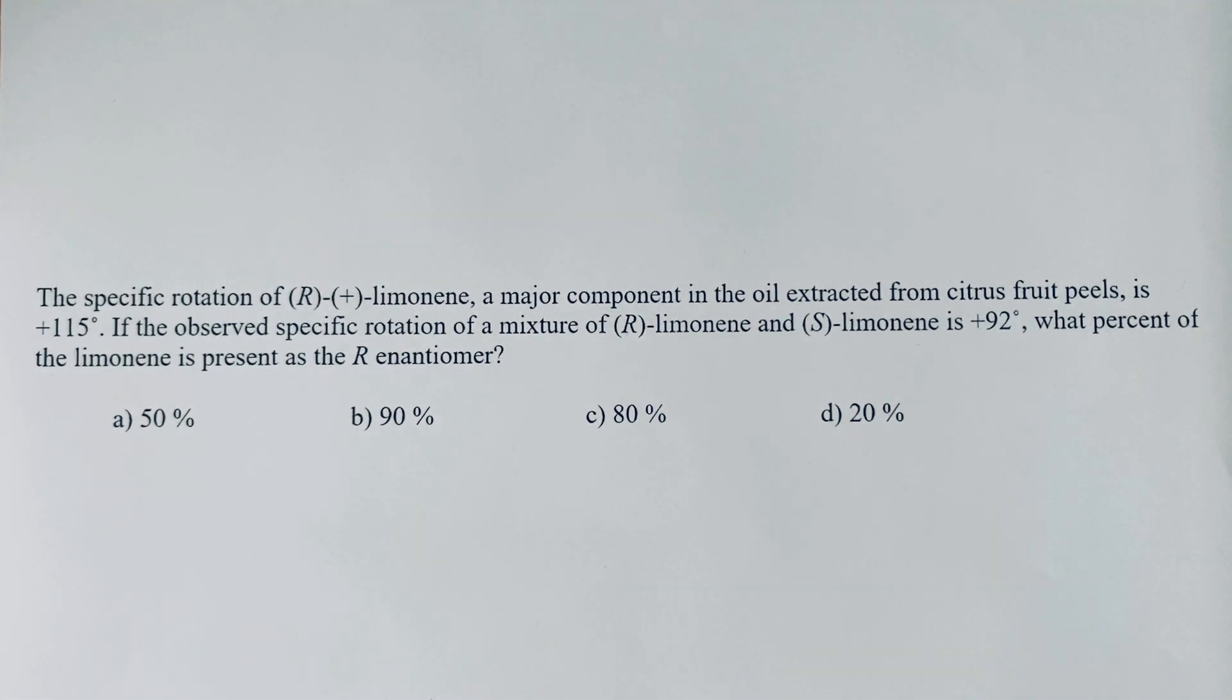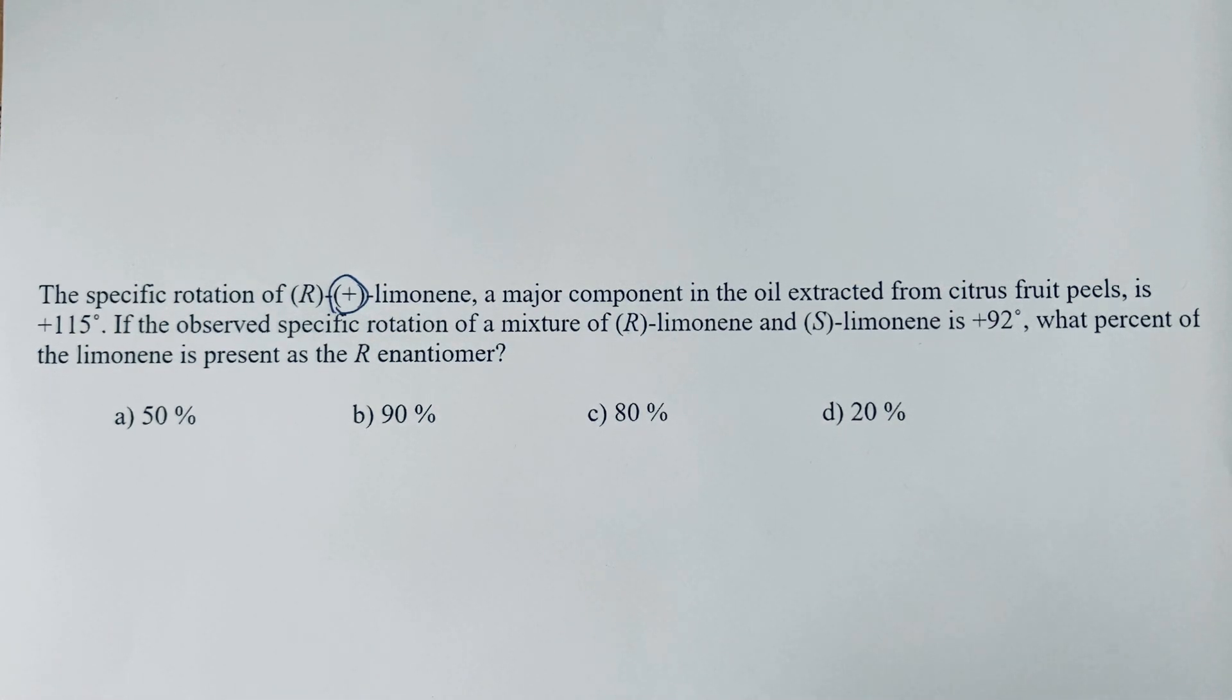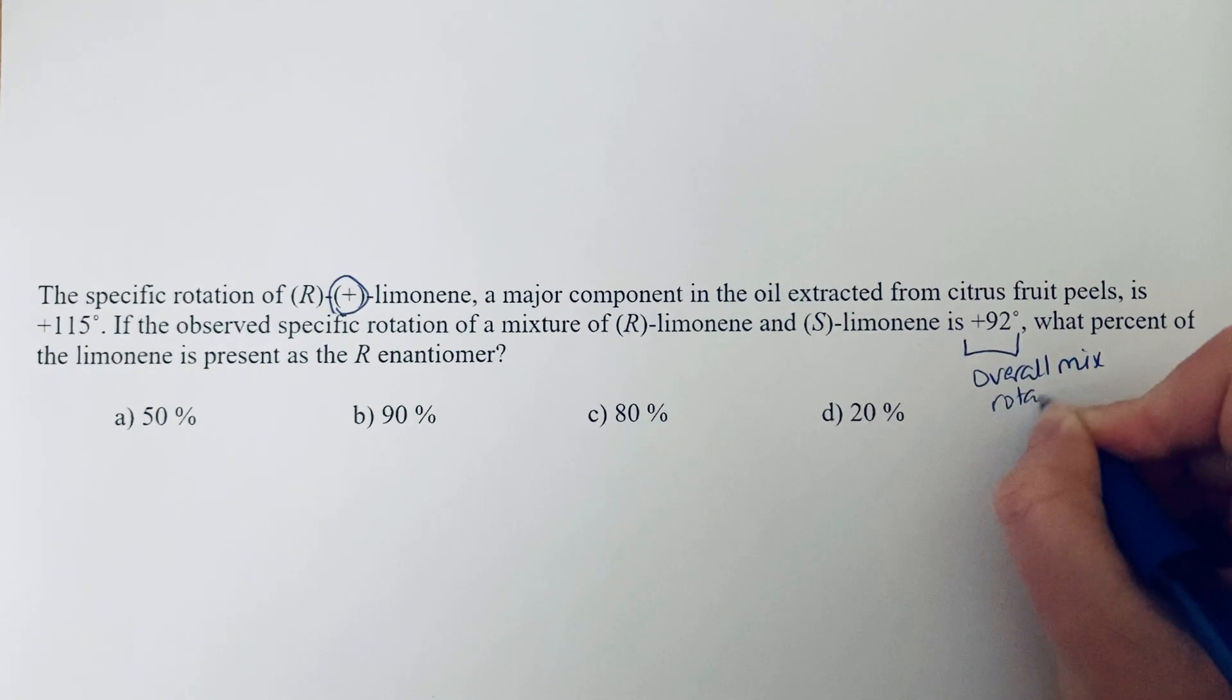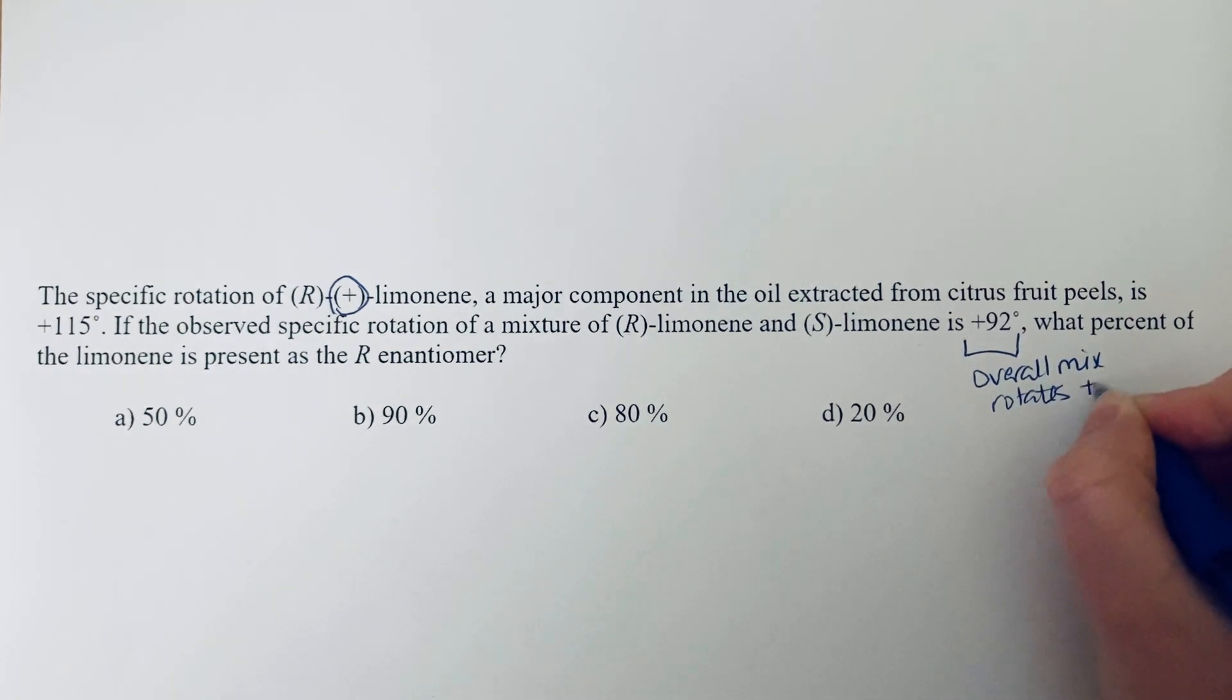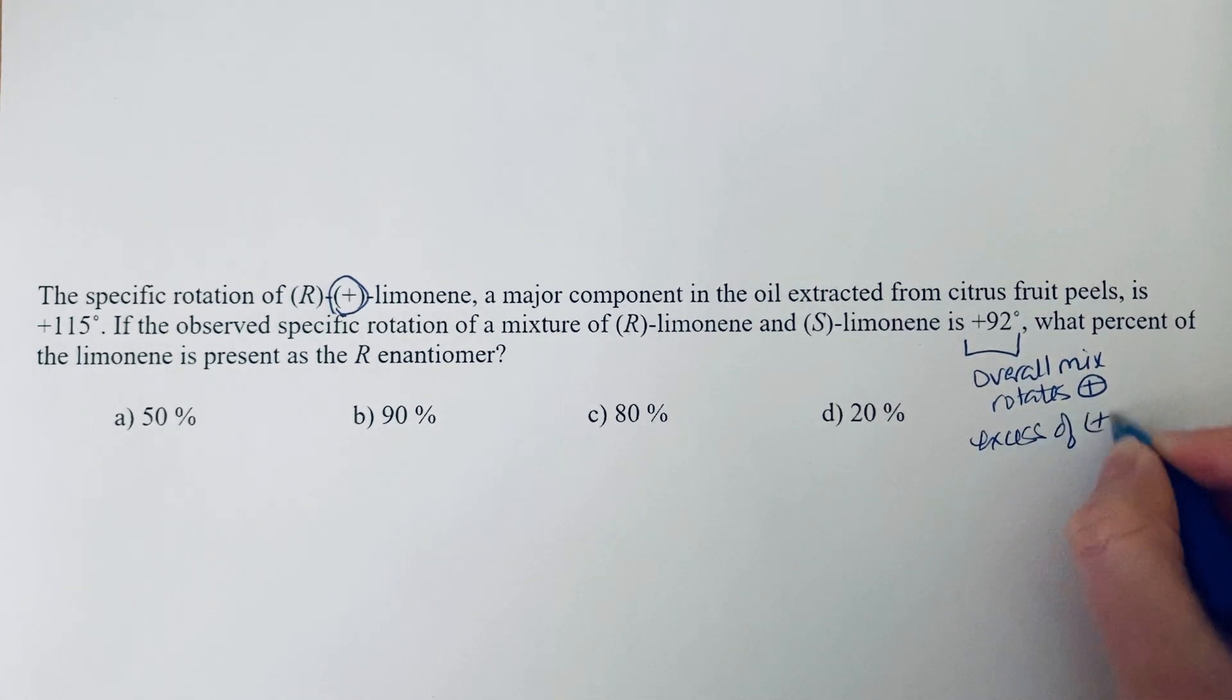Okay, so quite a few things we need to think about here. The first thing we want to notice is that the R is positive. So if we have an excess of the positive enantiomer, the overall mixture is going to have a positive rotation. If you had an excess of the negative S-limonene, then our overall mixture would have a negative rotation. We notice that our overall mix rotates light in the positive direction, so that means we have an excess of the positive enantiomer.